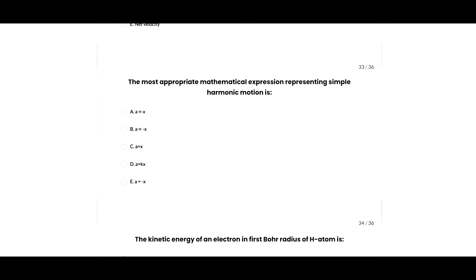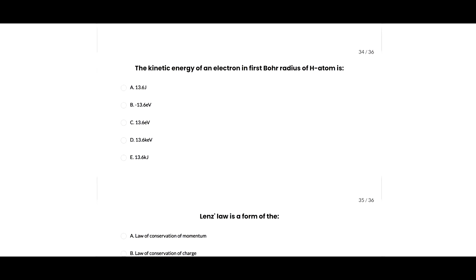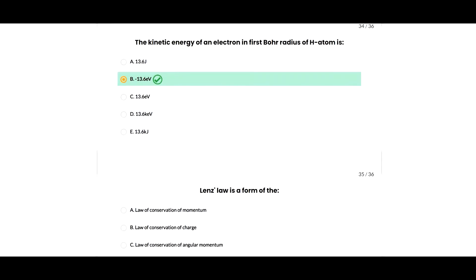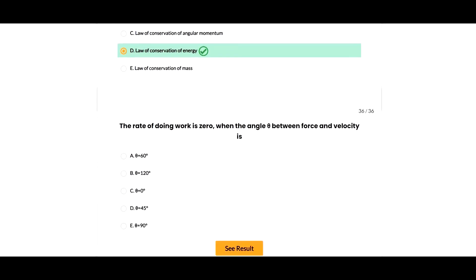Next question: the most appropriate mathematical expression representing simple harmonic motion is acceleration directly proportional to minus x. Next question: the kinetic energy of an electron in the first Bohr orbit of a hydrogen atom will be minus 13.6 eV, so E option is correct. Next question: Lenz's law is a form of the law of conservation of energy.